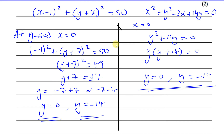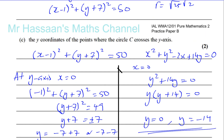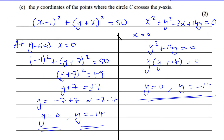That completes part c. Part d says: find an equation of the tangent to C at the point (2, 0), giving your answer in the form ax plus by plus c equals 0, where a, b, and c are integers. To help visualise this, let me make a quick sketch of the circle. The center is at (1, negative 7), so it's down here somewhere.